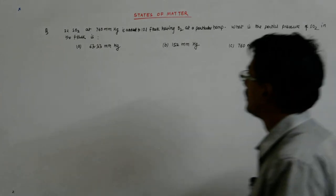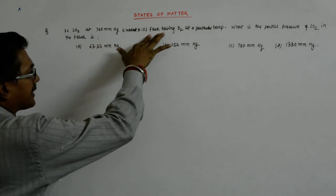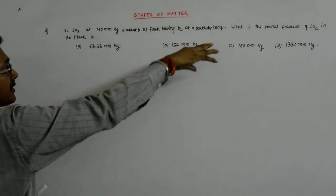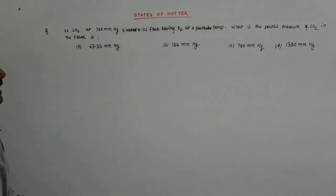So let us try to solve this question. Two liter SO2 at 760 mmHg is added to a 10 liter flask having O2 at a particular temperature. What is the partial ratio of SO2 in the flask?